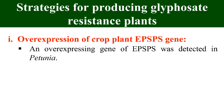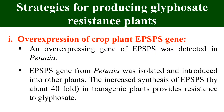In the first strategy, we overexpress the gene for EPSPS in our plant. This gene was generally taken from Petunia. By isolating the gene from Petunia and introducing it into our plant, we can increase the production level of the EPSPS enzyme in our transgenic plant, which ultimately gives resistance to glyphosphate. These plants can tolerate glyphosphate at a dose 2 to 4 times higher than required to kill wild-type plants.